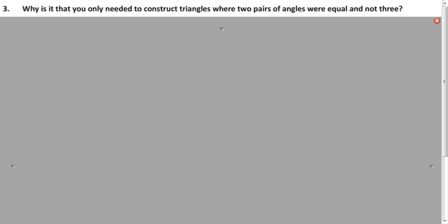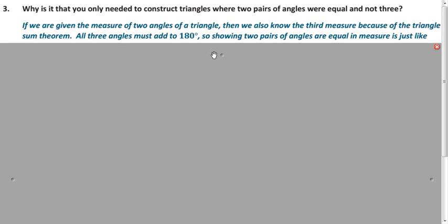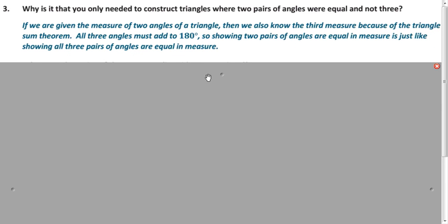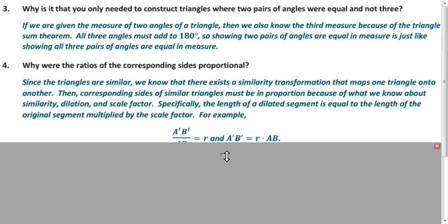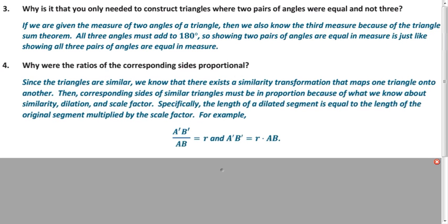So why do we only need two pairs of angles? How do we know those third ones are congruent? Well, since we know that those angles have to have 180 degrees, those third angles have to be the same measure. And how are those corresponding side lengths proportional? We know that we have a similarity, and so the corresponding side lengths of the similar triangles must be in proportion.